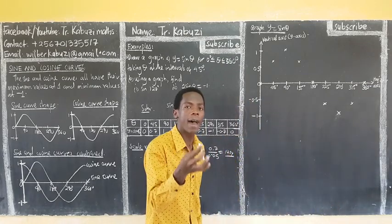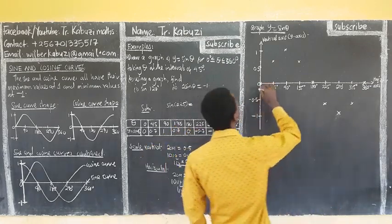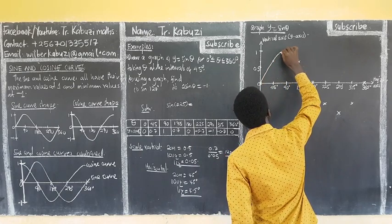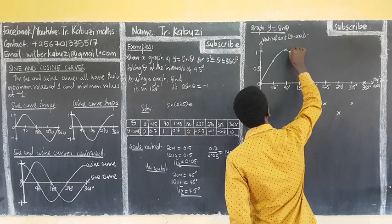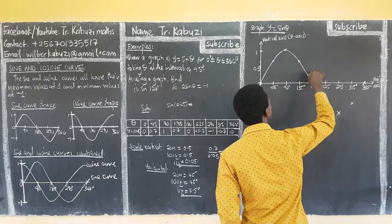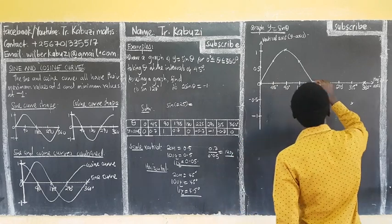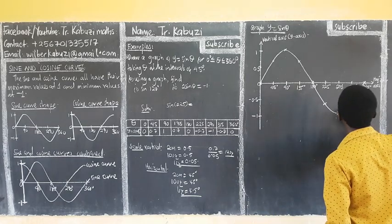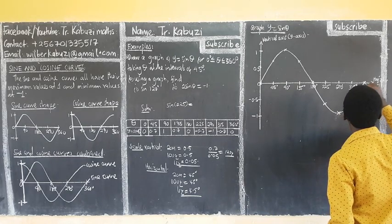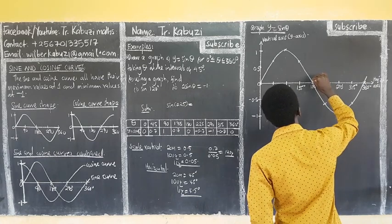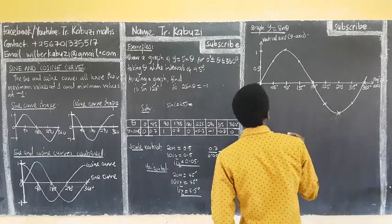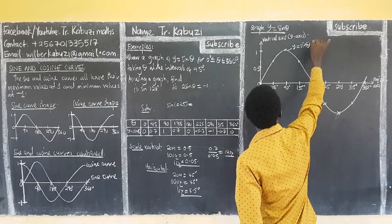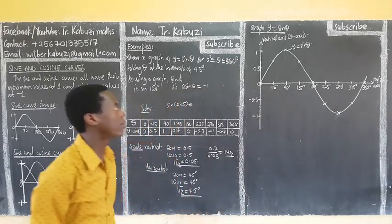You join these points using a freehand curve. So you start from this point, you join going up like this, up to the maximum point, then it curves downwards using a freehand motion. It comes back down and goes through the negative region like that. So you are done with plotting that graph. After that, you come and label it — this is why we call it y = sine(θ). That's the name we always want.